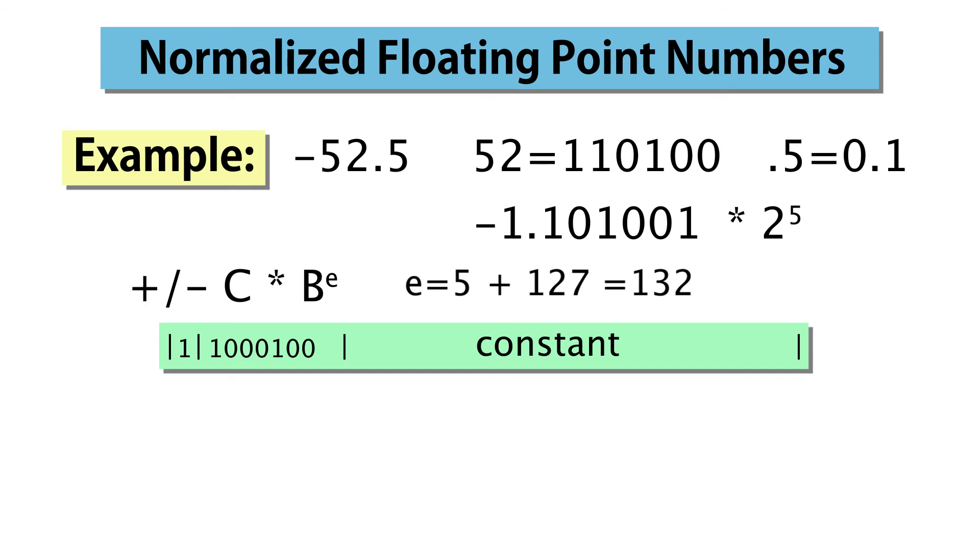The only thing that remains is to fill in the 23 bits of the constant field. In floating point jargon, this field is also called the frac or the mantissa.